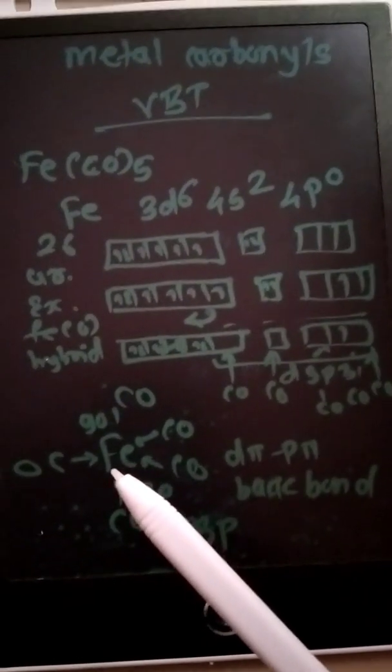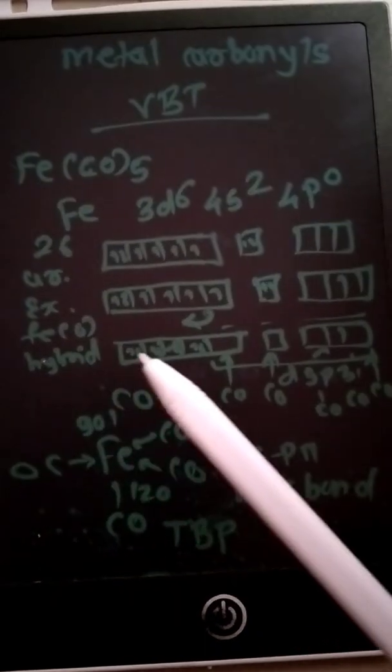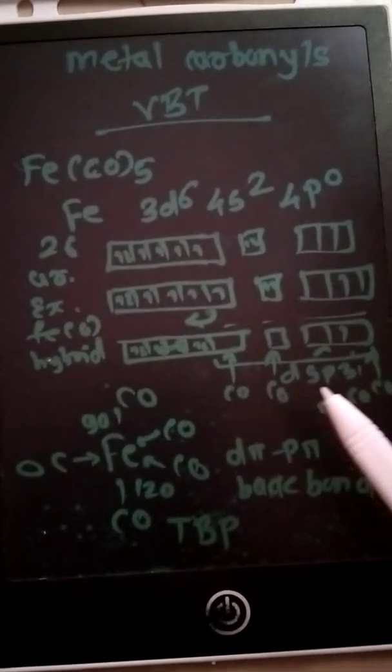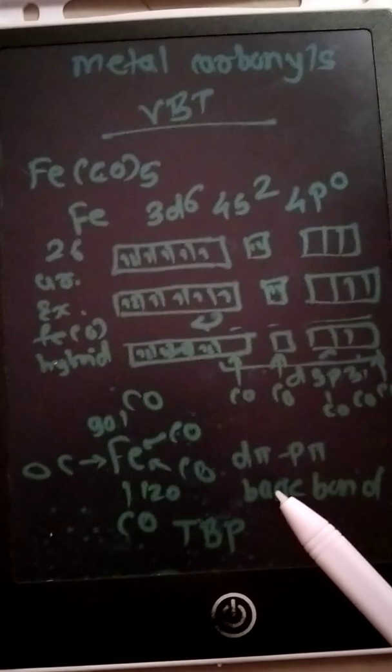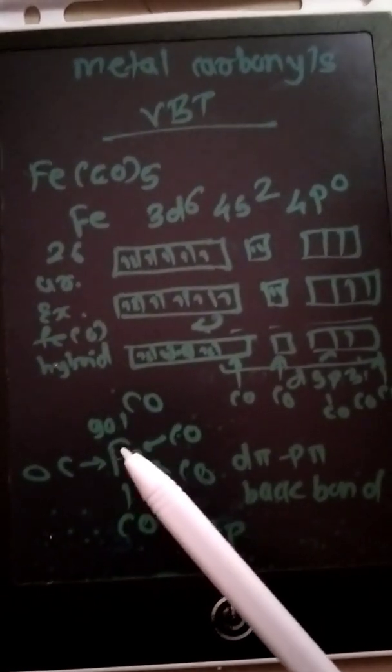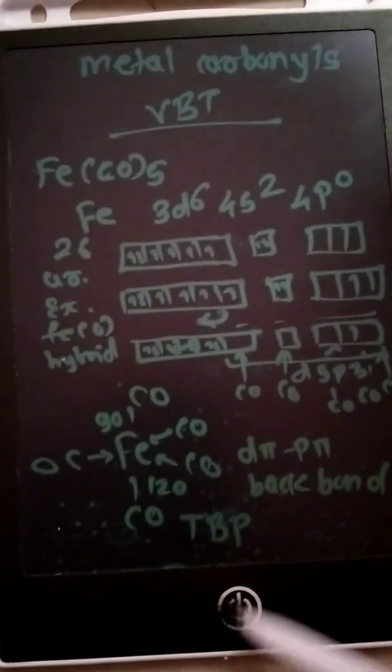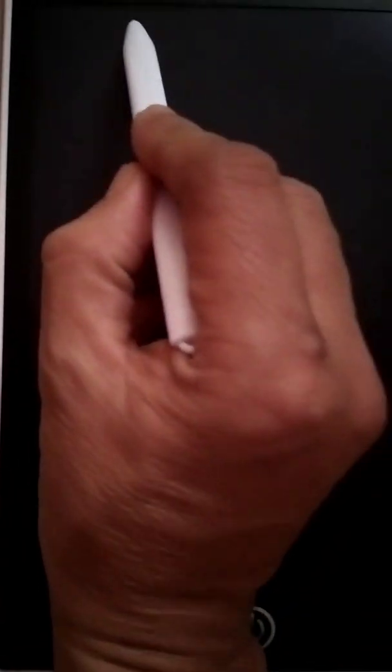So in this way, VBT explains the hybridization dsp3, TBP geometry, the bond angles 120 and 90 degrees, and back bonding d-pi-p-pi present in the metal carbonyl. Let's take another example of chromium CO6, means hexacarbonyl chromium zero.